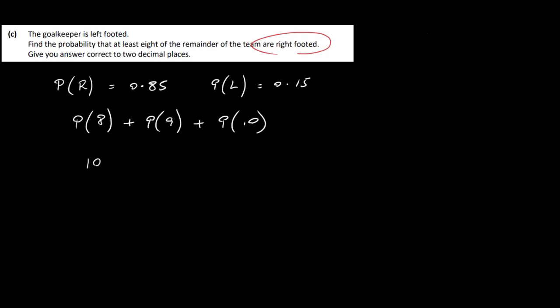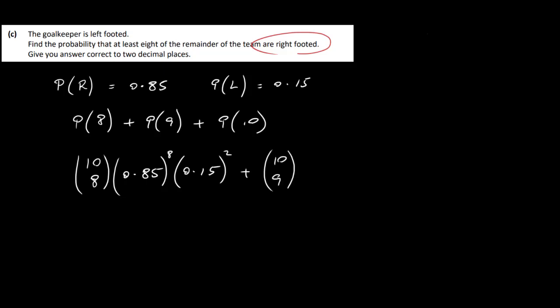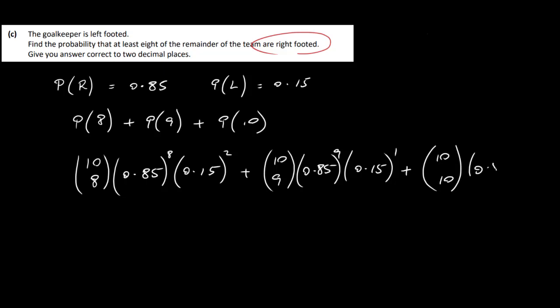So we calculate from 10 players: 10 choose 8, times 0.85 to the power of 8, times 0.15 to the power of 2, plus 10 choose 9, times 0.85 to the power of 9, times 0.15 to the power of 1, plus 10 choose 10, times 0.85 to the power of 10, times 0.15 to the power of 0. Work each one out individually, add them up, and you should get 0.82 to two decimal places. That's it for this question.